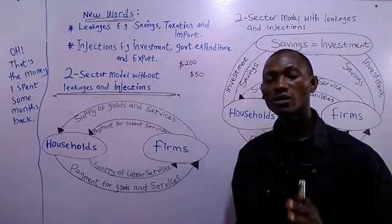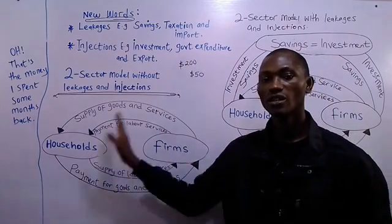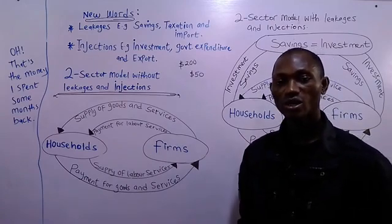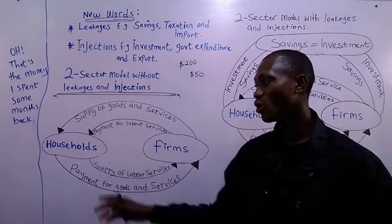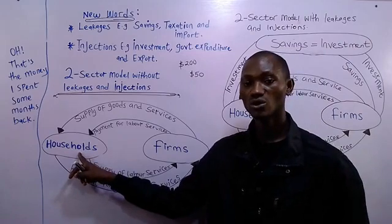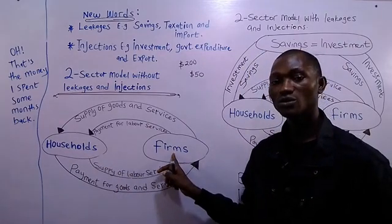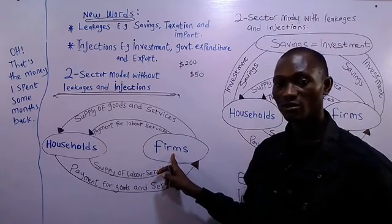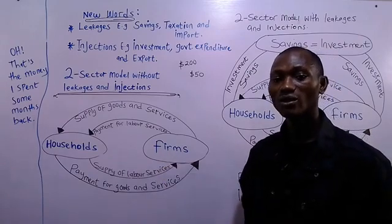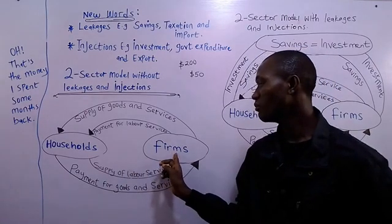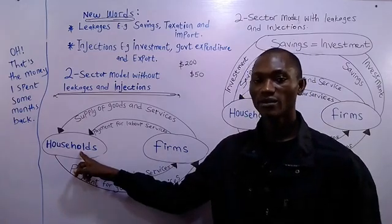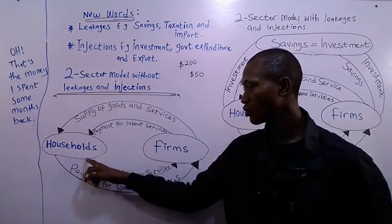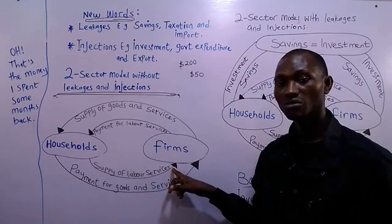One of the assumptions of circular flow of income is that factors of production — such as land, labor, capital, and entrepreneurial services — are held by the households. For a firm to produce, the firm needs the service of these factor inputs. So the firm will request the service of factors of production from the household. One of these is labor services, and the household will supply labor services to the business firm.